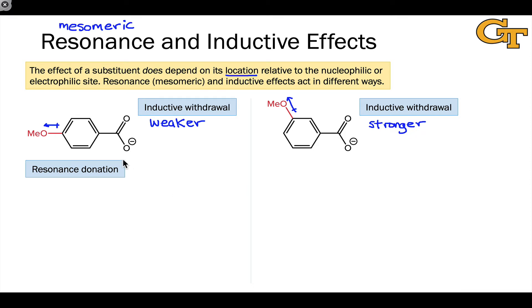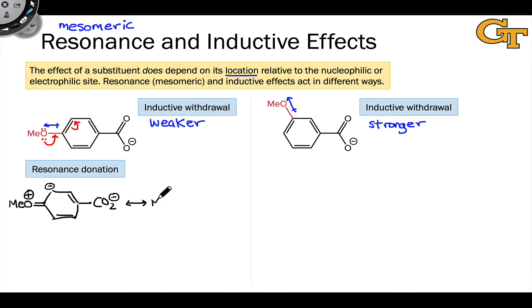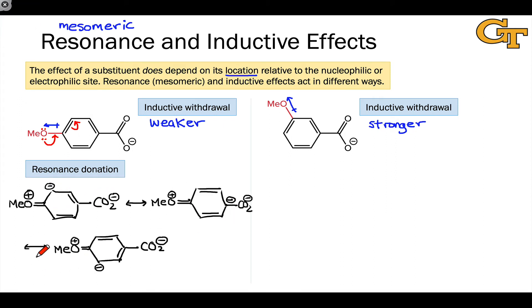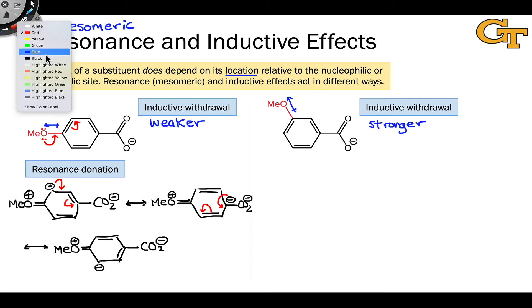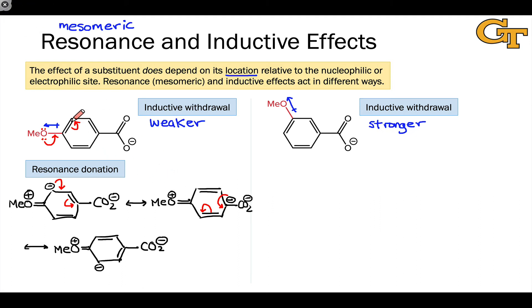What about resonance effects? Resonance donation in the para isomer is profoundly different from resonance donation in the meta isomer. Let's draw out resonance structures using the methoxy group as an electron donating group in a resonance sense. I've gone ahead and laid down the resonance structures and drawn a set of curved arrows that get us to this first resonance structure. We can continue to push that lone pair around the benzene ring to generate a second resonance form, and then a third resonance form with negative charge on the other carbon that's ortho to the methoxy. What these resonance structures are showing us is that the methoxy is most significantly donating electron density to positions that are ortho and para with respect to itself. In particular, I want to point out the donation of electrons to the para carbon, which is connected directly to the carboxylate.